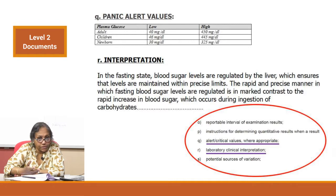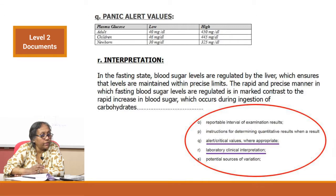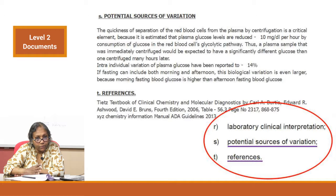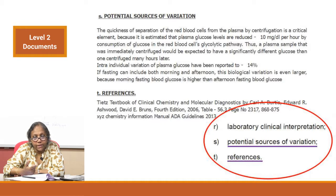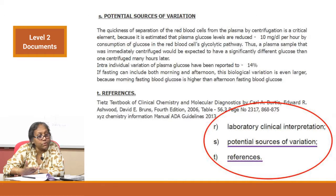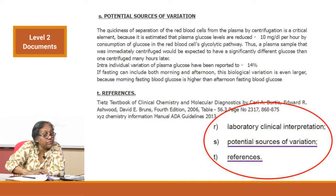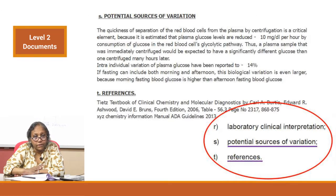Sub-clause R is interpretation — whatever interpretations are relevant to glucose estimation should be included, without going into excessive detail. Sub-clause S is potential sources of variation. Write down the preanalytical variables, including both intra-individual and inter-individual variations. For glucose, food intake is a major variable. Additionally, for this analyte, the quickness of separation of red cells from plasma by centrifuge is a critical element. Whatever the technician should know, just write it down.